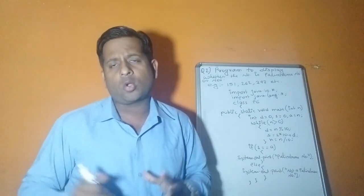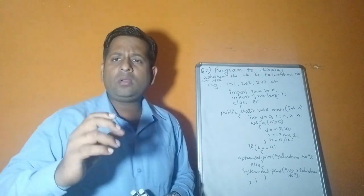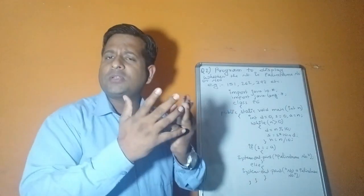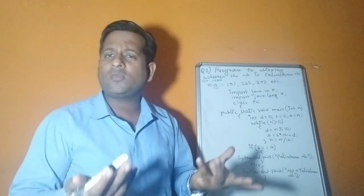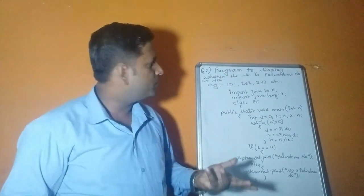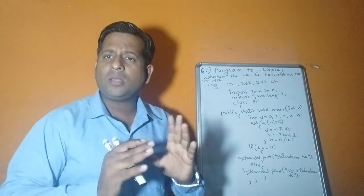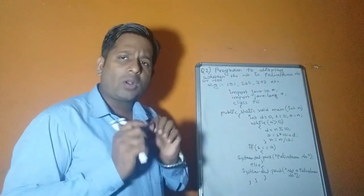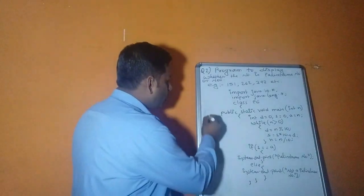A palindrome number is one whose value remains the same after reversing it. For example, 151 reversed is 151, 262 reversed is 262, 393 reversed is 393. So any number that gives the same value after reversing is a palindrome. Here we need to reverse the digits of the number.